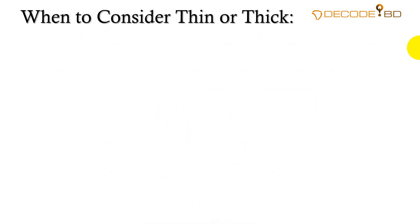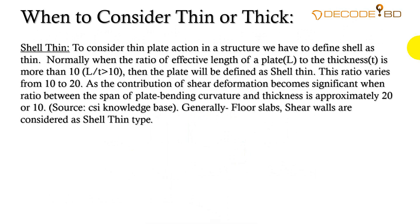When to consider thin or thick shell: to consider thin plate action, we define the shell as thin. Normally, when the ratio of effective length L to thickness T is greater than 10 (L/T > 10), the plate is defined as shell thin. This ratio varies from 10 to 20, as the contribution of shear deformation becomes significant when the ratio between span and thickness is approximately 10 to 20. This is referred to in the CSI Knowledge Base. Generally, floor slabs, shear walls, etc. are considered as shell thin type.